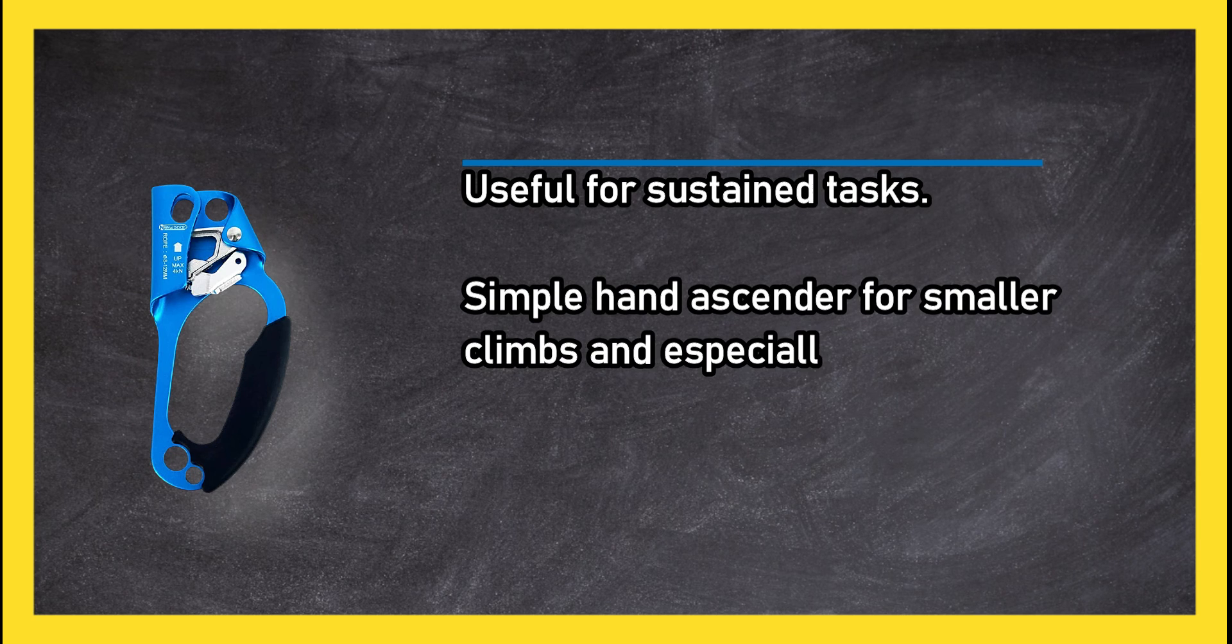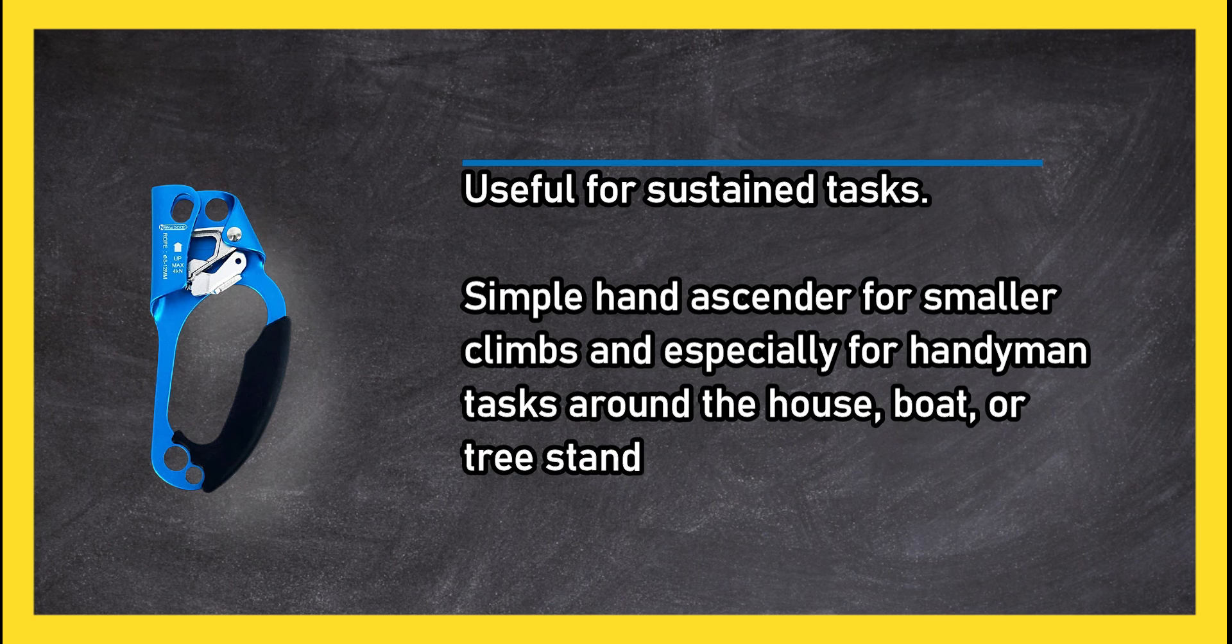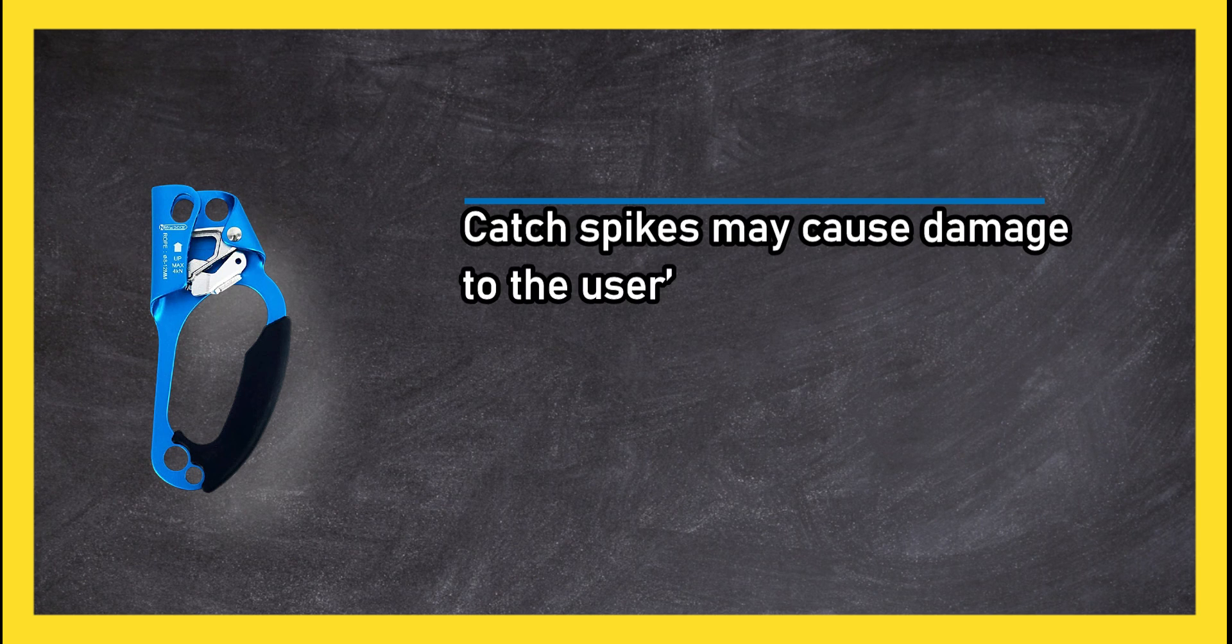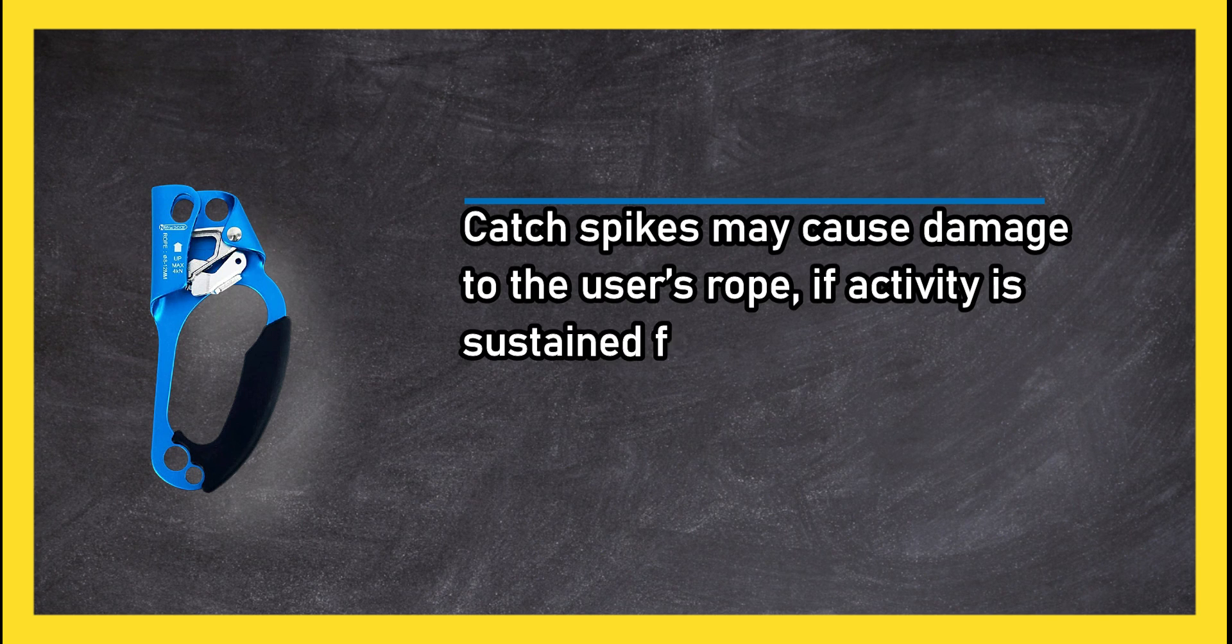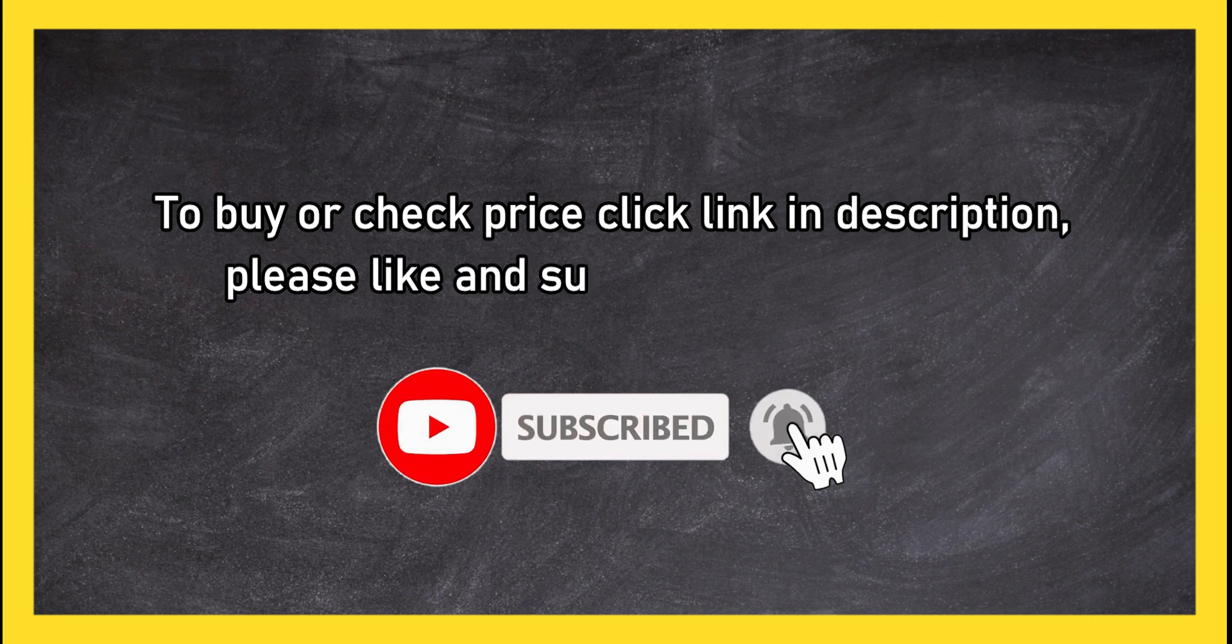Simple hand ascender for smaller climbs and especially for handyman tasks around the house, boat, or tree stand. Catch spikes may cause damage to the user's rope if activity is sustained for long periods. To buy or check price, click link in description.